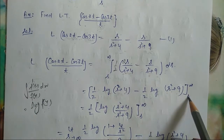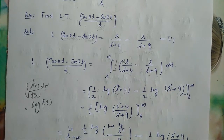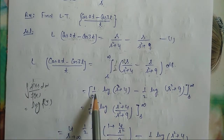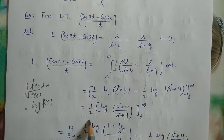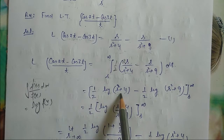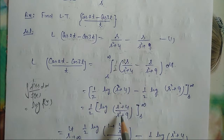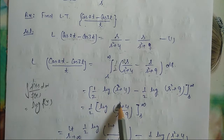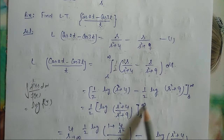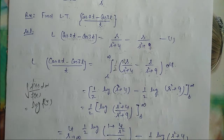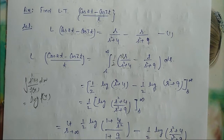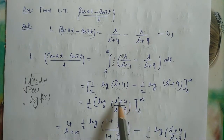The limit is from s to infinity. Taking (1/2) outside, this becomes (1/2) [log(s²+4) − log(s²+9)], which equals (1/2) log[(s²+4)/(s²+9)], with the limit s approaching infinity. Substituting s = ∞ gives infinity/infinity — an indeterminate form.